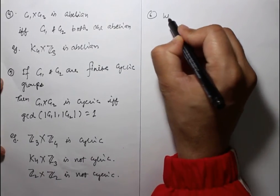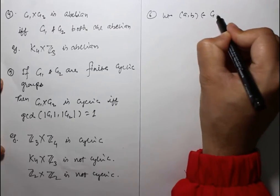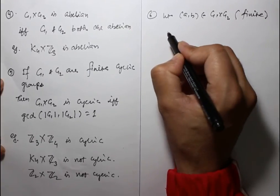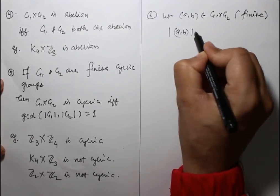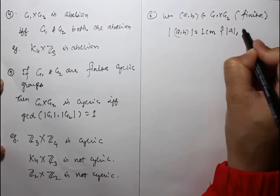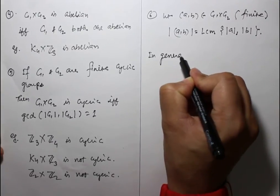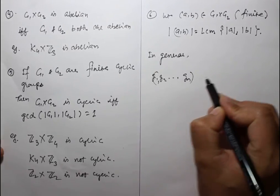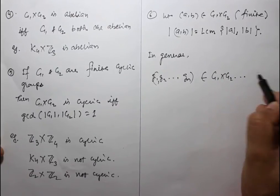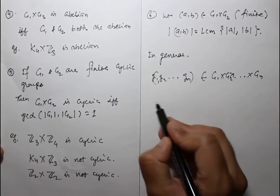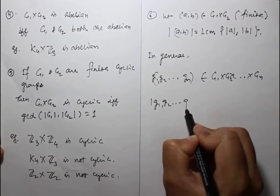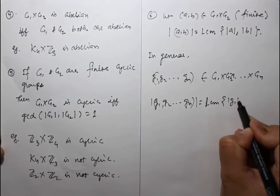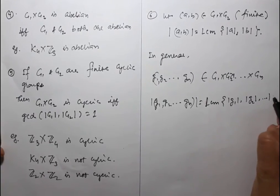One of the most important properties of the Cartesian product of groups: Let (A, B) belong to G1 cross G2, where this product is finite. Then the order of (A, B) equals the LCM of the order of A and the order of B. In general, for (g1, g2, ..., gn) in G1 cross G2 cross ... cross Gn, the order equals LCM of order of g1, order of g2, ..., order of gn.